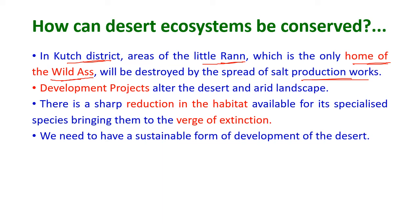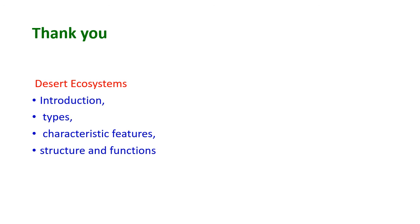Developmental projects are altering desert and arid landscapes, reducing the habitat available for specialized species and bringing them to the verge of extinction. We need to focus on sustainable forms of development for the desert. In this video, under ecosystems, we have seen the introduction, types, characteristic features, structure, and conservation concerns of desert ecosystems.